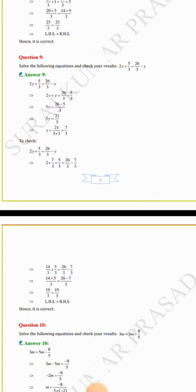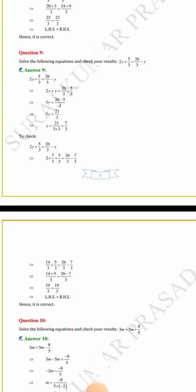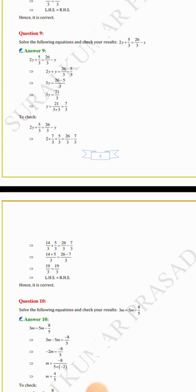Question number 9: solve 2y + 5/3 = 26/3 − y. Rearranging: 2y + y equals 26/3 minus 5/3, giving 3y equals 21/3. So y equals (21/3) ÷ 3 = 21/9, and the value of y is 7/3.